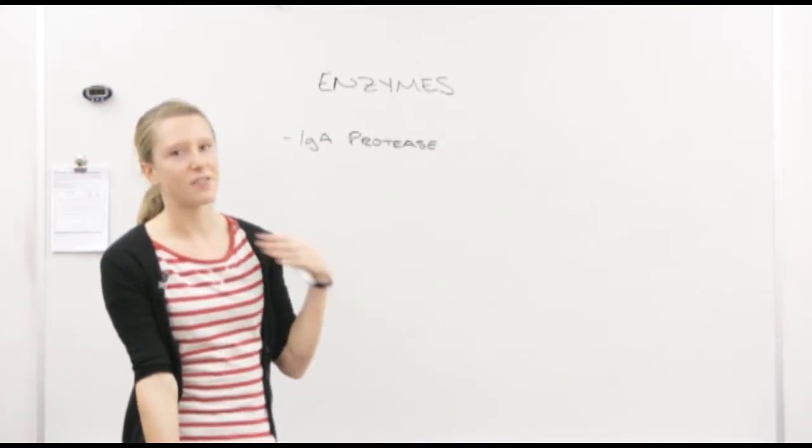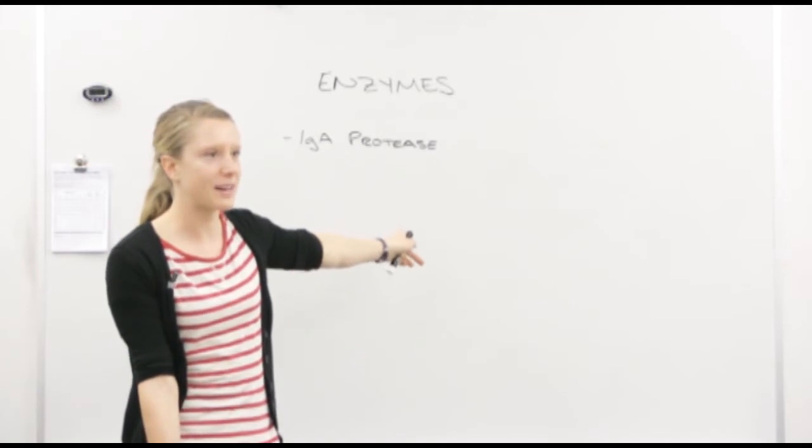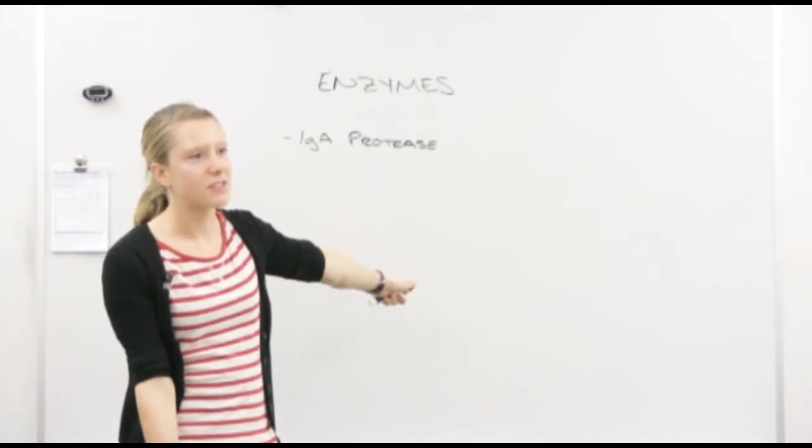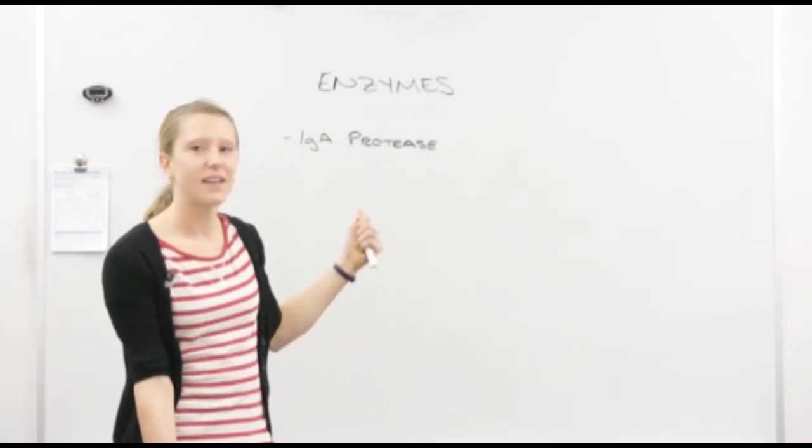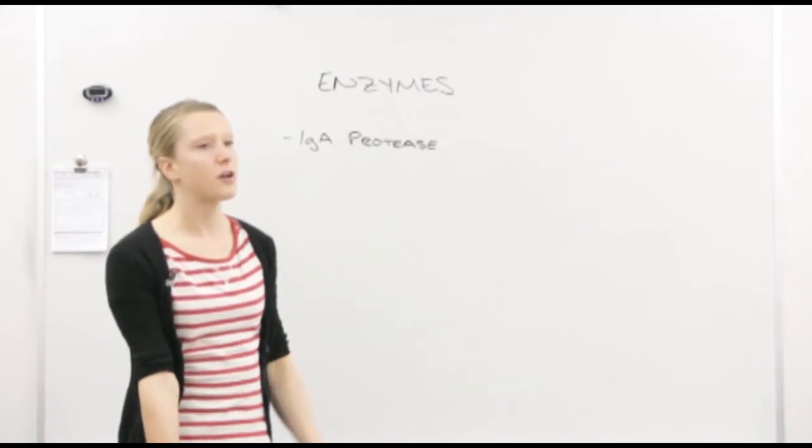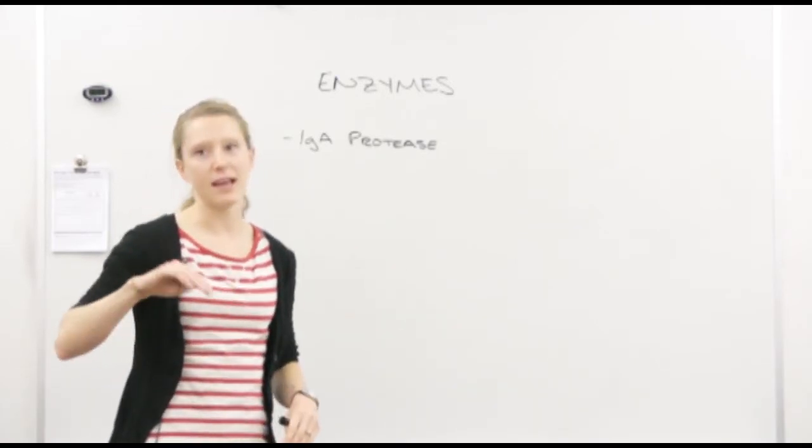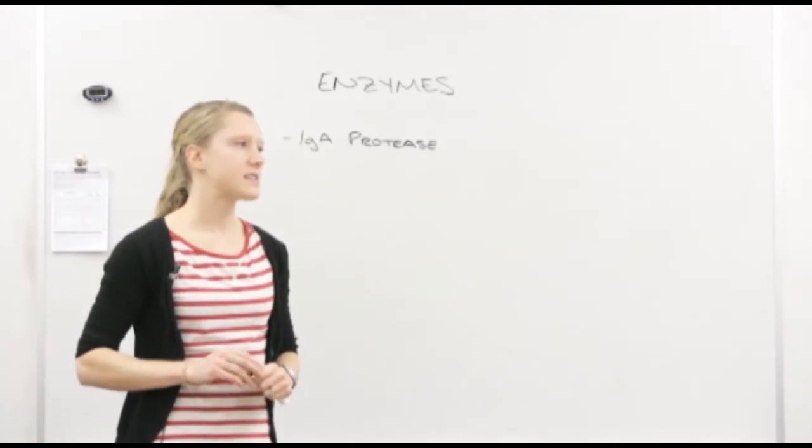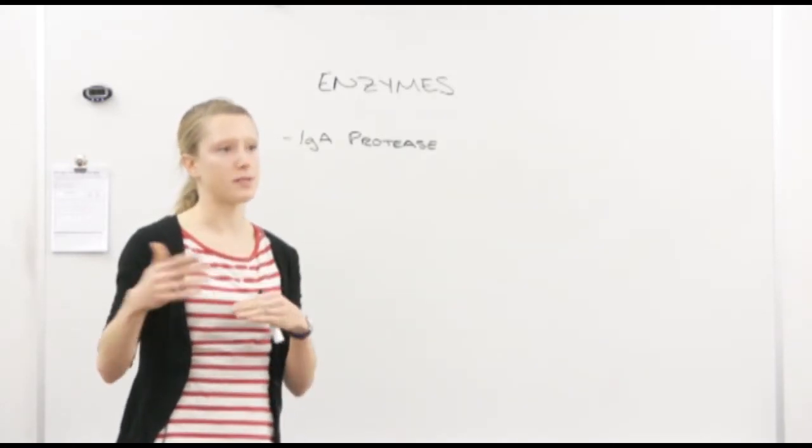Yeah, I'm going to tear it off, rip it off. What do they want to do to the IgA antibody? Rip it off. So what do they secrete? IgA protease. Protease is an enzyme. Anything that ends in ase is an enzyme. Protease is an enzyme that breaks up proteins.